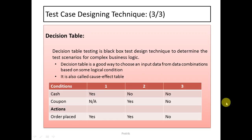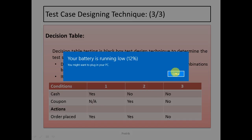I have designed a table here to help you understand it. There are conditions — Condition 1, Condition 2, and Condition 3 — and based on those conditions a certain action is performed. For example, if a customer goes to a merchant and has cash, then the coupon condition is not applicable and the order can be placed.